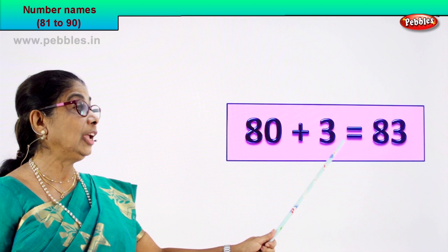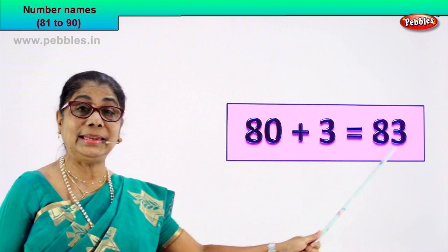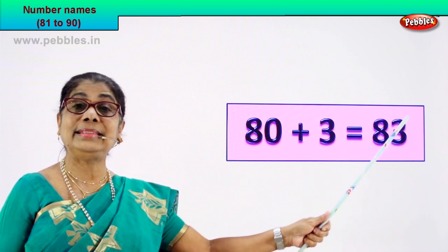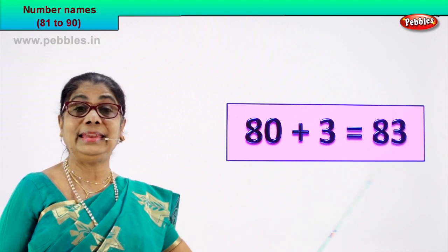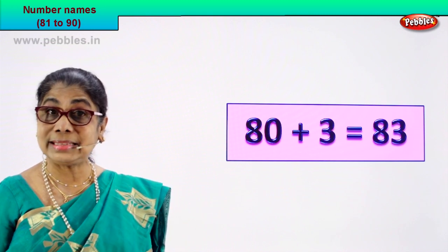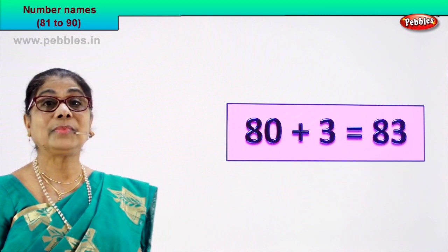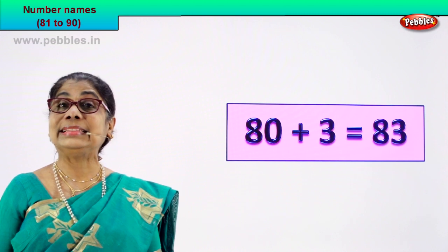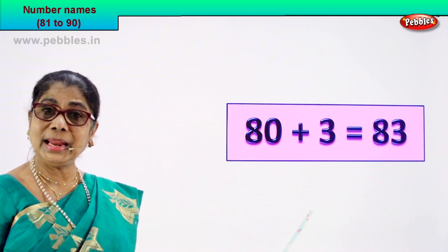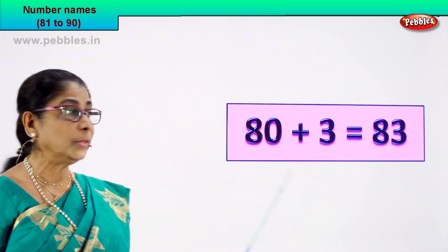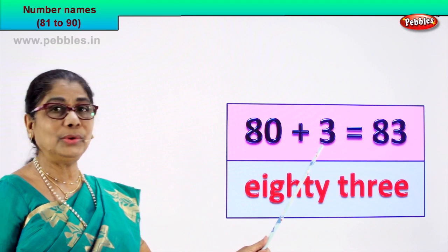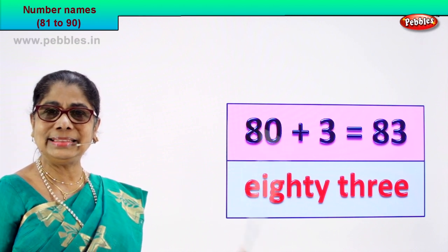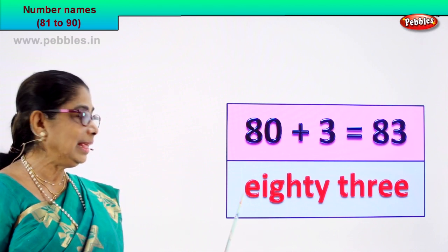Look — 80 plus 3 is equal to 83. 8 and 3 is 83. That is the numeral. You know to spell 80 and you know to spell 3, so you write eighty-three.